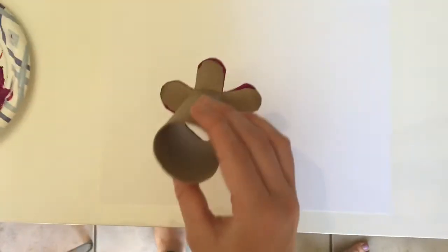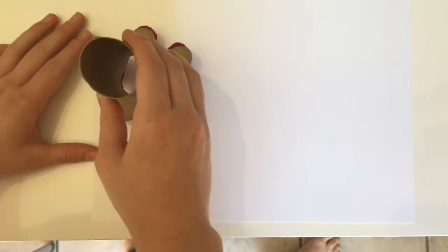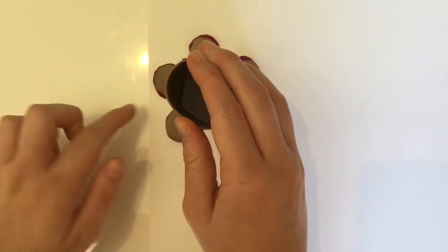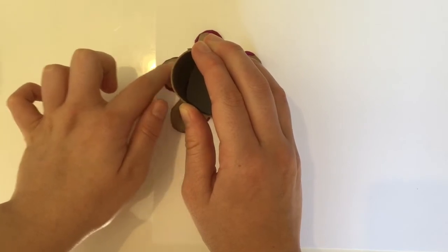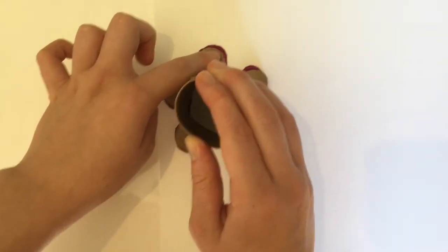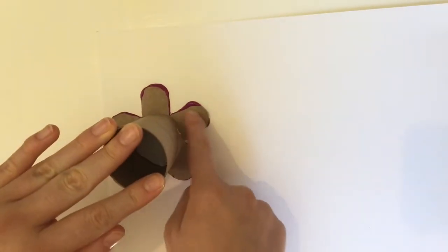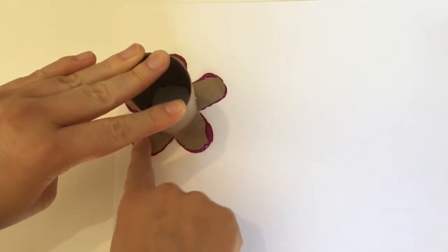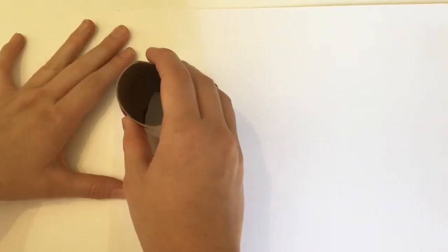And then you're going to stamp it onto your paper. And you might have to push down on the tops of the petals to get the paint to completely reach the paper. And then lift up.